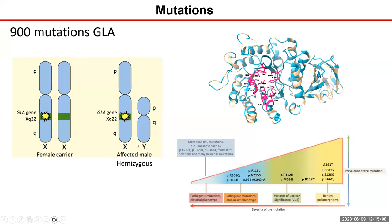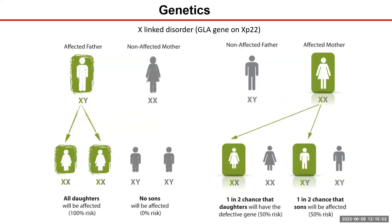In males, because they only have one X chromosome, they're called hemizygous and will obligatorily develop disease. In the past, we thought females were only carriers who wouldn't develop disease at all. But in fact, the majority of females will develop some symptoms. While females are generally affected to a lesser degree, that's not always true — plenty of women are affected just as severely as males. The concept that women with Fabry have a benign disease is not true; we have to watch for symptoms and treat them accordingly.